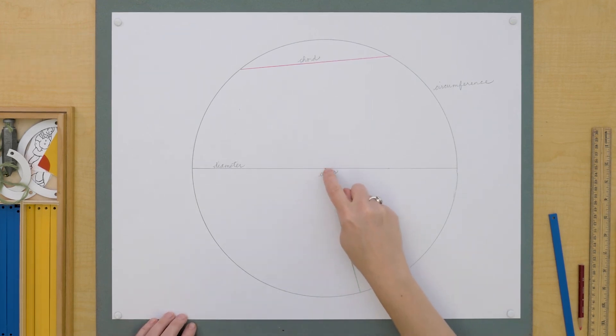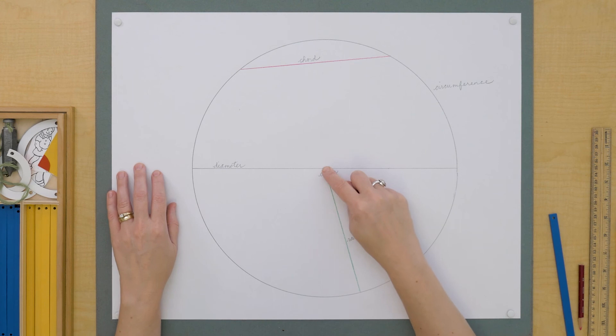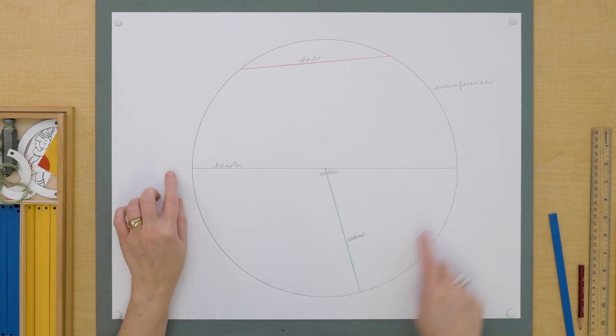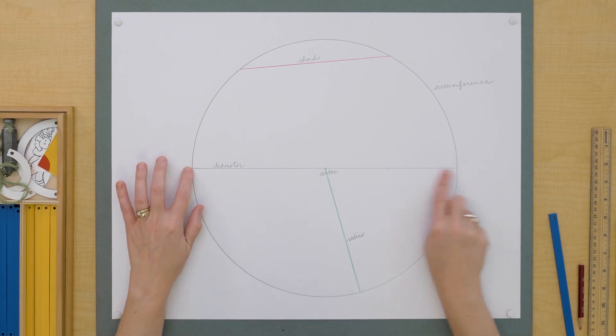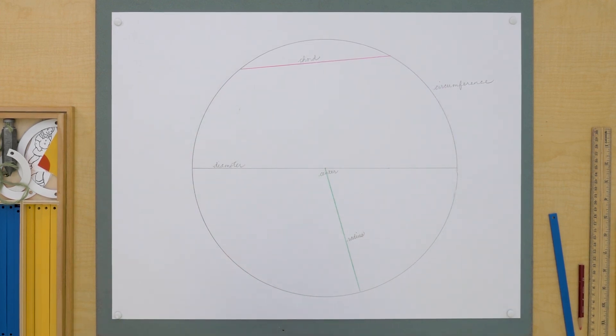So we have the center of our circle, the circumference is the outer boundary. The radius has its endpoints on the center and the circumference. The diameter has both endpoints on the circumference and passes through the center. And the chord has both endpoints on the circumference but doesn't pass through the center. Maybe you'd like to trace your own circle and label its parts.